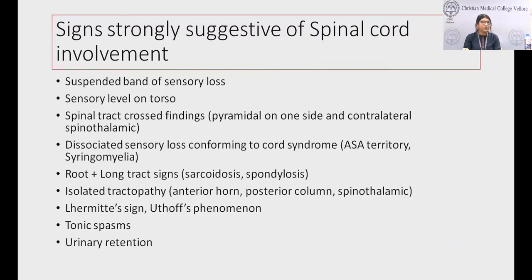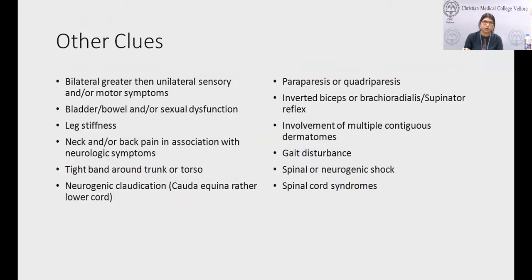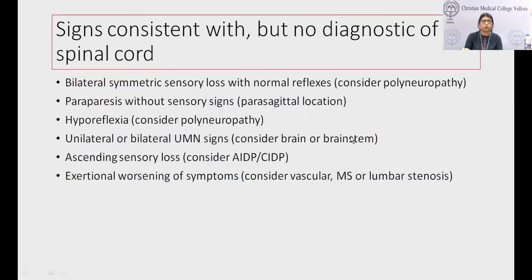Signs strongly suggestive of spinal cord involvement: suspended sensory loss, sensory level on the trunk, spinal tract crossed findings, dissociative sensory loss, root plus long tract signs, Lhermitte's sign, Uhthoff's phenomenon (classically seen in multiple sclerosis), tonic spasms — sudden onset involuntary flexor spasms seen in cord lesions — and urinary retention. Other clues: bilateral greater than unilateral motor and sensory involvement, tight band-like sensation around the chest or abdomen, neurogenic claudication for cauda equina, and inverted biceps, brachioradialis, and supinator reflexes.